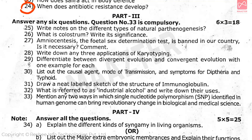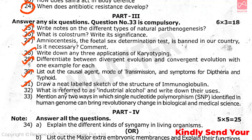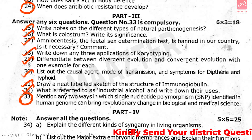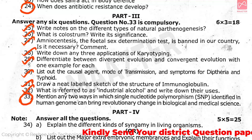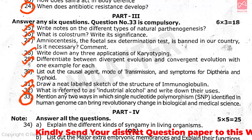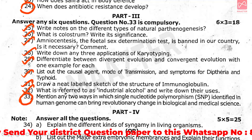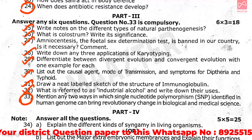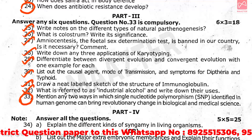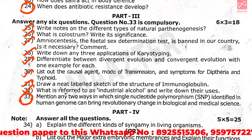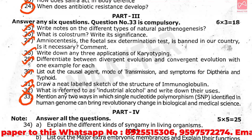Next is Part 3, which has 9 questions. You need to answer 6 questions, each carrying 3 marks, for a total of 18 marks. Question 33 is a compulsory question on two ways in which single nucleotide polymorphism identified in the human genome can bring revolutionary change in biological and medical science.